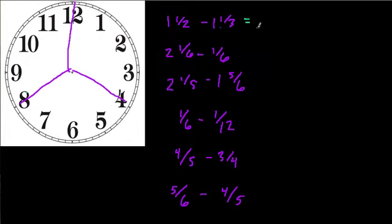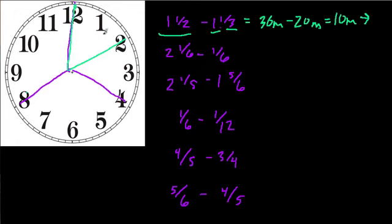First we have 1½ minus 1⅓. If I take an hour from 1½, I still have 30 minutes left over. So it's like 30 minutes minus 20 minutes, because a third of an hour, you see it here in the clock, every third is 20 minutes. That gives us 10 minutes, and each 10-minute chunk is 1/6 of the total. So that's 1/6. Next, we use that here. We take 10 minutes from 2 hours and 10 minutes, and we have 2 hours. So that's pretty straightforward.